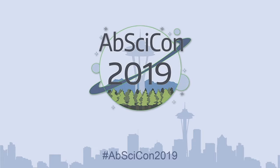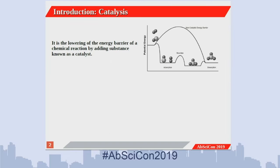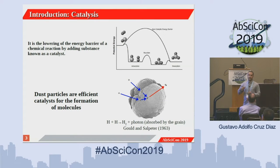Thank you everyone for staying for the last talk. I'm going to talk about polycyclic aromatic hydrocarbons and their mineral interaction. Catalysis is the process of lowering the barrier of a chemical reaction by adding something called a catalyst. This catalyst brings together two elements so that their reaction is maximized on the surface of the catalyst. This was suggested to be happening in space by Gold and St. Peter in 1963, where they discussed the formation of molecular hydrogen on the surface of dust particles. This is important because it suggests that in the absence of an energy source, you can produce more complex or bigger molecules.